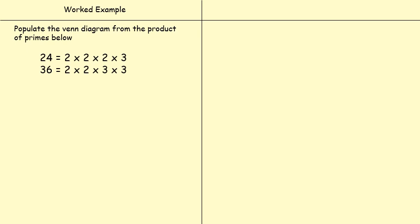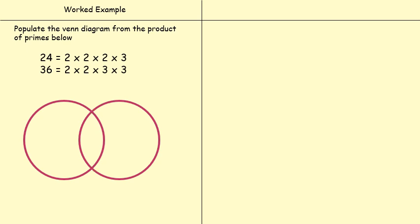So we're saying 24 is made up of two times two times two times three as prime numbers — if you multiply those together they make 24. 36 is two times two times three times three — multiply those together and they make 36. So in the circle on the left, everything in that circle represents 24. In the circle on the right, everything in that circle represents 36. And then what we can say is anything in the middle section represents numbers that are in both the 24 and 36 lists. So any numbers in the middle are contained within both 24 and 36.